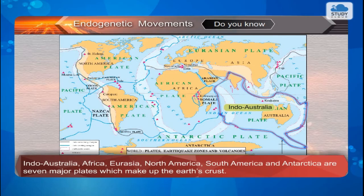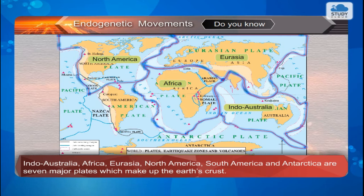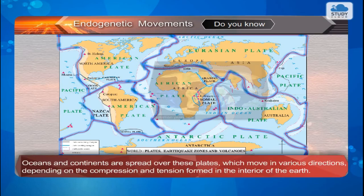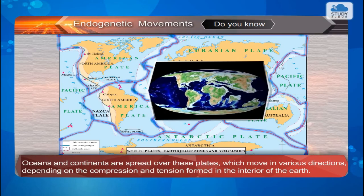Do you know? Indo-Australia, Africa, Eurasia, North America, South America, and Antarctica are seven major plates which make up the Earth's crust. Oceans and continents are spread over these plates, which move in various directions depending on the compression and tension formed in the interior of the Earth.